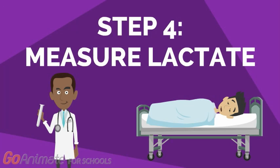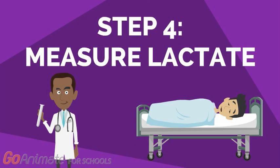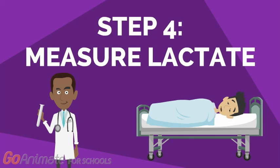Step 4 involves measuring lactate. Due to reduced perfusion of oxygen to the tissues, the cells of our bodies begin to shift to anaerobic respiration, thus producing more lactate. Higher concentrations of lactate indicate lower levels of oxygenated blood. Lactate measurements are obtained through blood serum samples. A lactate concentration of greater than 1 mmol per liter indicates low oxygen blood saturation.